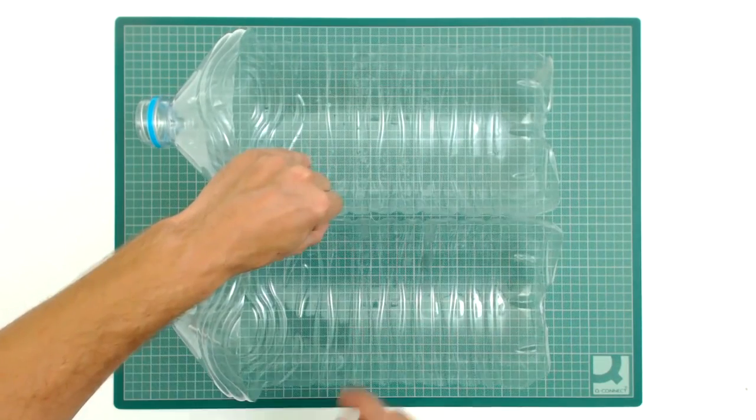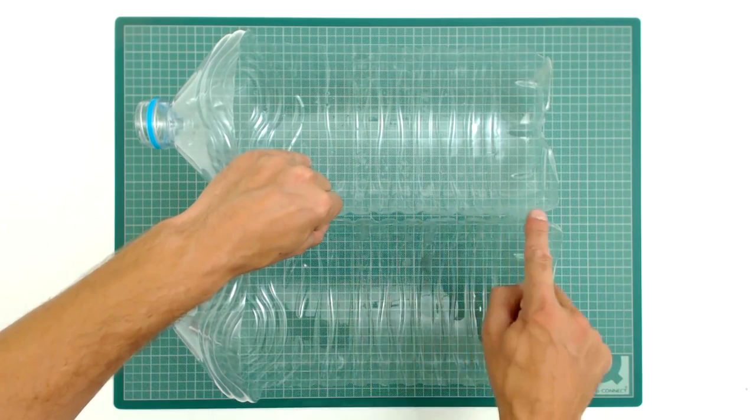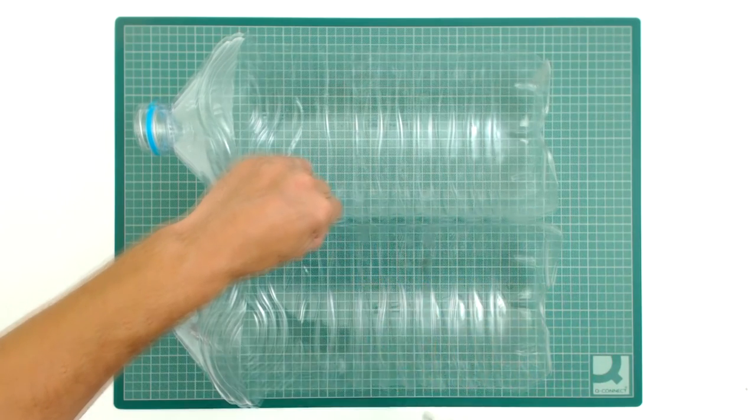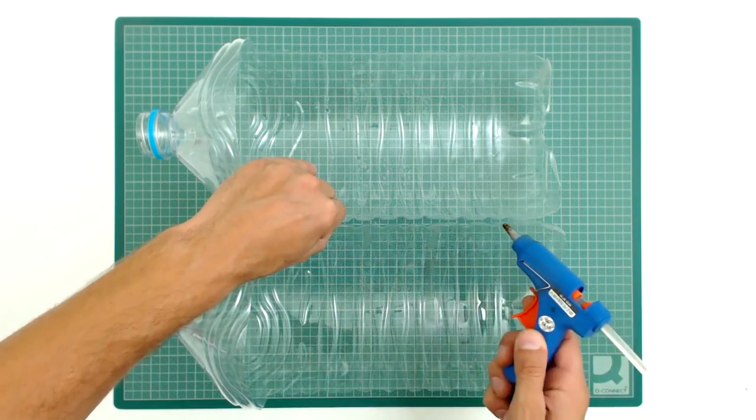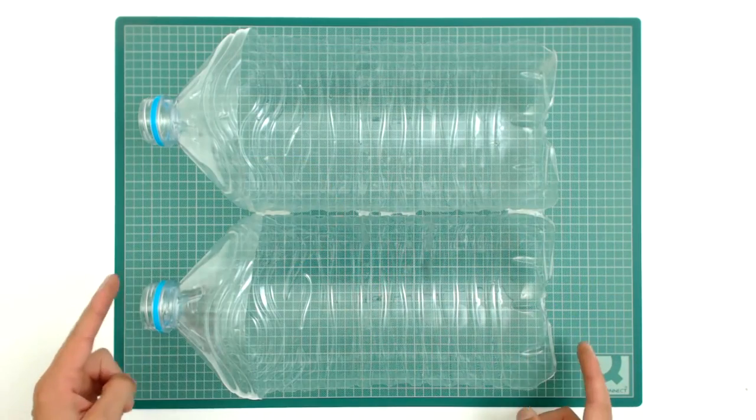The next thing to do is to join the sides together with silicone. The idea is to make one single piece.